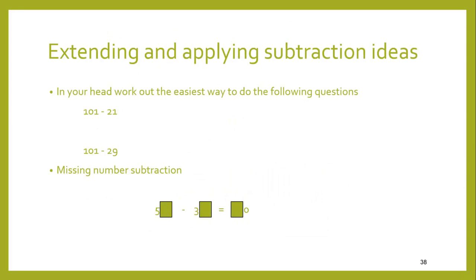In your head, can you work out the easiest way to do the following: 101 take away 21, and 101 take away 29? And what's the missing digit — each square should be the same digit — that makes the calculation true? The first should be easy: 21 from 101 — the ones go, 20 from 100 leaves 80. When working out subtracting 29, take away 21 first, it gives you 80, then another 8 to take away leaves an answer of 72. Well, 30 from 50 left 20, so the digit to the right should be 2 — and since each square represented the same digit, it must have been 52 take away 32 is 20.